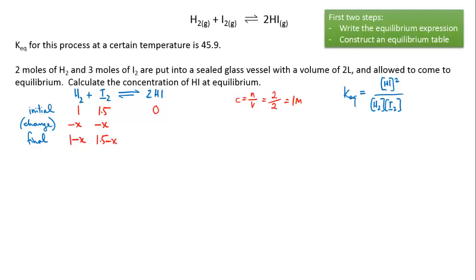And it's a one to two ratio between hydrogen and hydrogen iodide, so if x moles of hydrogen is used then 2x moles of hydrogen iodide must have been made. So at equilibrium we have 2x hydrogen iodide.